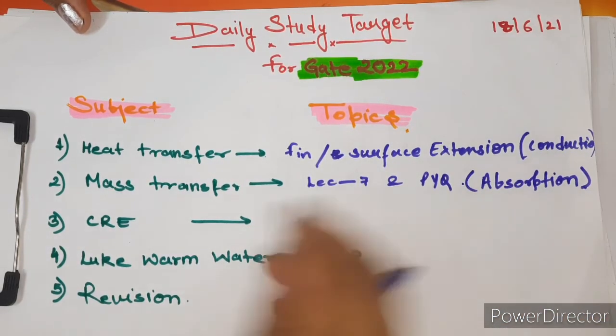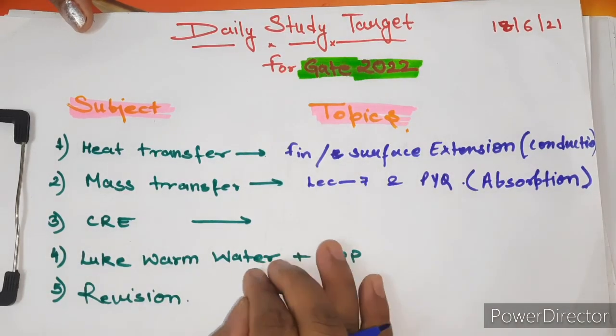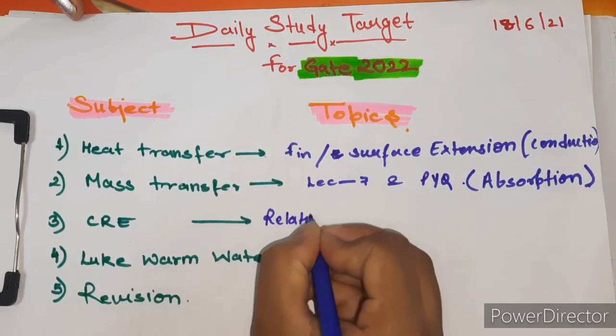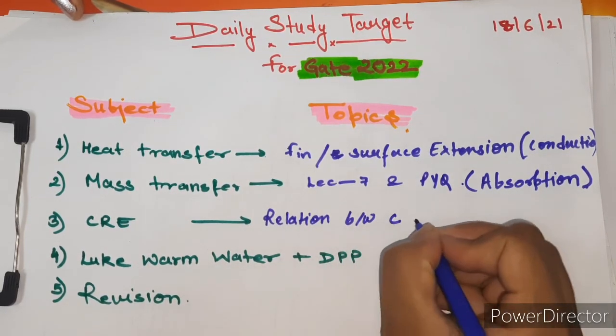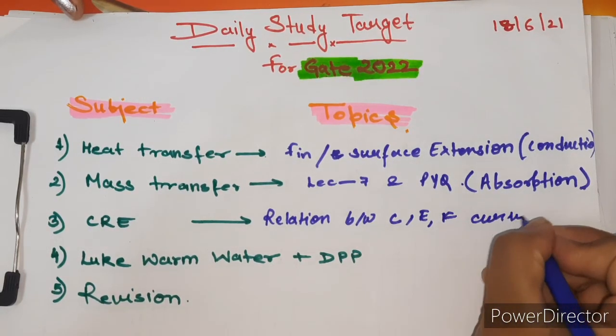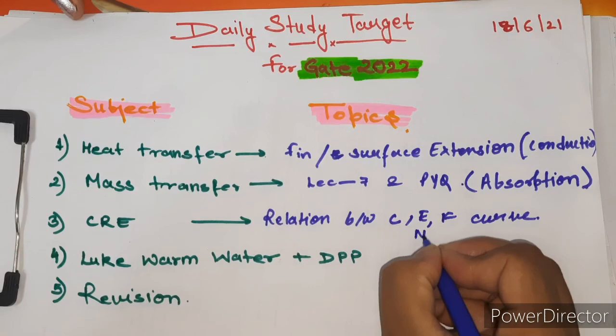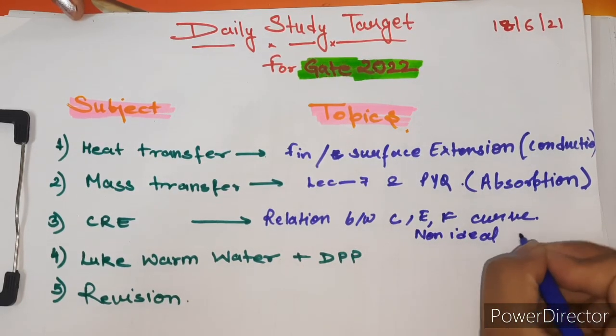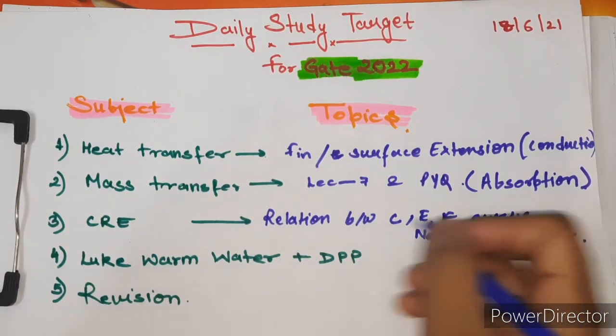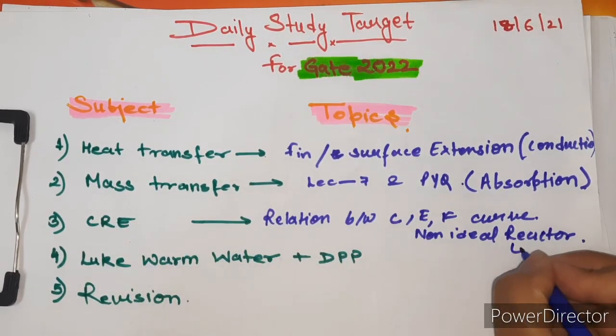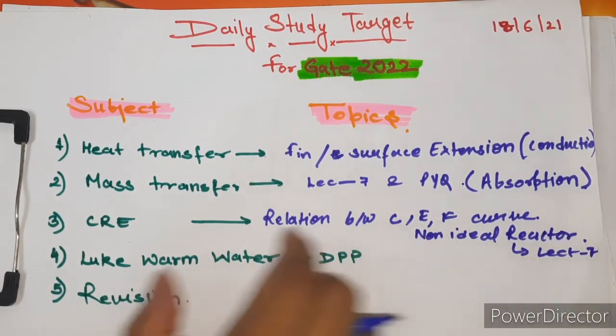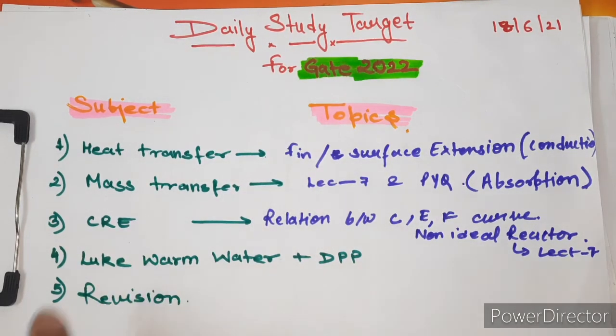Next subject is CRE. In this lecture, I am going to study the relation between C, E and F curve. And this topic is from the non-ideal reactor. It means I am going to study lecture number 7 given by Salenser which is on Dead Planet's channel.